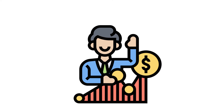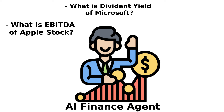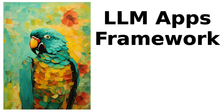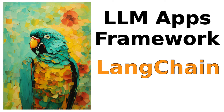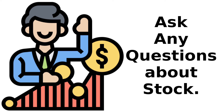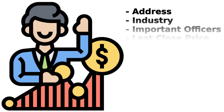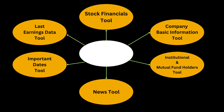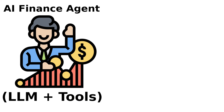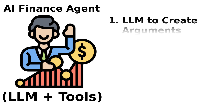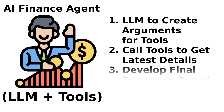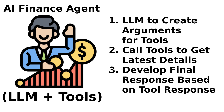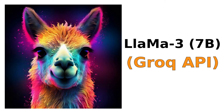In this video I will explain how you can create a finance agent to answer various questions about any stock ticker. We will use the famous LLM app building framework LangChain for coding our agent. The finance agent can answer various questions about any stock like their address, industry, important officers, last close price, total debt, total revenue, P/E ratio, margins, institutional holders, etc. We will define various tools to retrieve the latest details about stocks, then use an LLM to generate arguments for those tools. An agent is LLM plus tools — it will use the LLM to create arguments, call tools to get latest details, and develop the final response. We will use the open-source LLM Llama 3 available through Groq API for this tutorial.